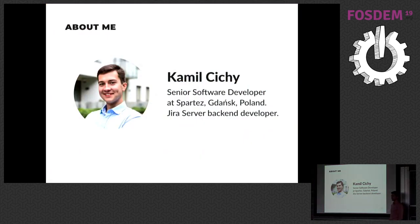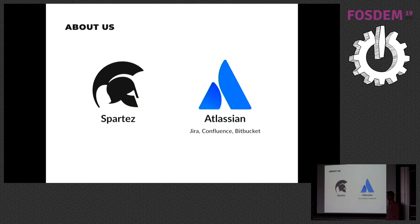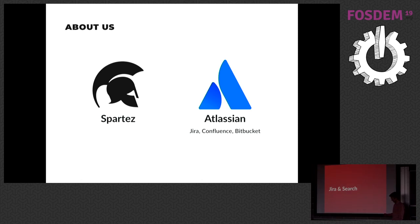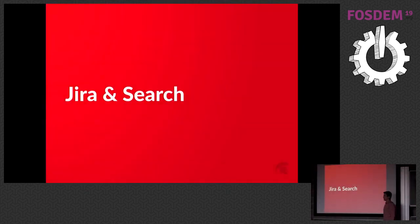I work for Spartus in Gdańsk, Poland as a software developer working on JIRA Server. Atlassian is the company behind products such as JIRA, Confluence, and Bitbucket — tools that let your teams collaborate more efficiently. Spartus is a very close partner of Atlassian, and we help them develop products such as JIRA, Bamboo, FishEye, and Crucible.